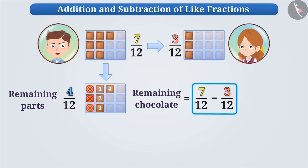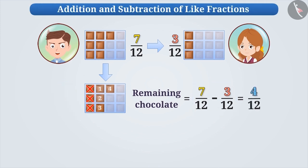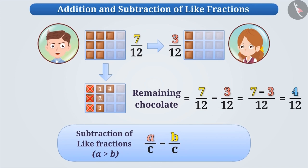Now can we say that seven by twelve minus three by twelve is equal to four by twelve? Yes, we can definitely say that. Since the denominator is the same, the numerators are subtracted from one another. Therefore, in order to subtract two or more than two like fractions, the smaller numerator is subtracted from the larger numerator and the common denominator is kept as it is.